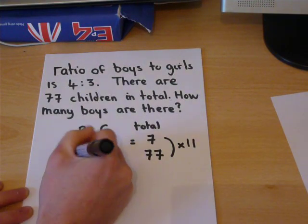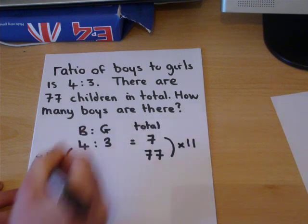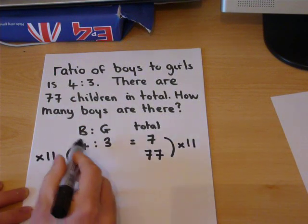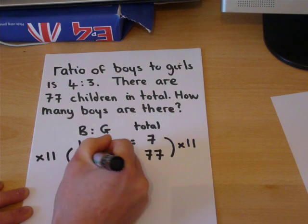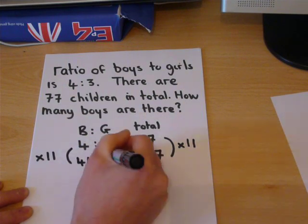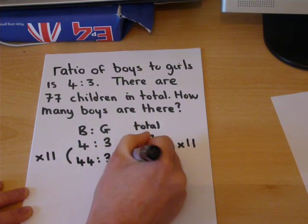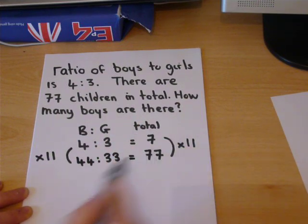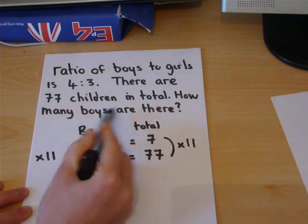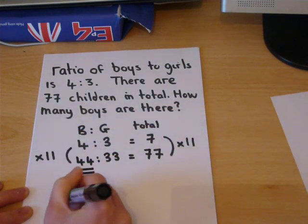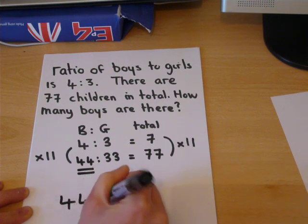So if there are 11 groups, and in each group there are 4 boys and 3 girls, there must be 44 boys and 33 girls, giving you your 77 children in total. So how many boys are there? There are 44 boys.